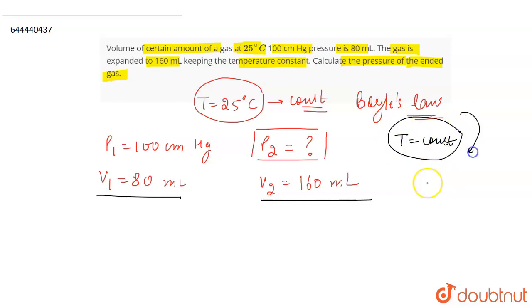So increase in volume means expansion of the gas. According to Boyle's law, the temperature is constant which means that pressure is inversely related to volume. So when you are given two pressures and two volumes, the Boyle's law can be written as P1 V1 is equal to P2 V2.